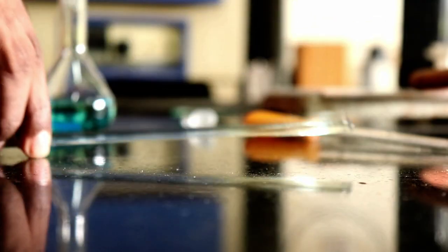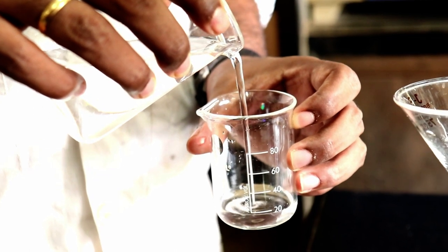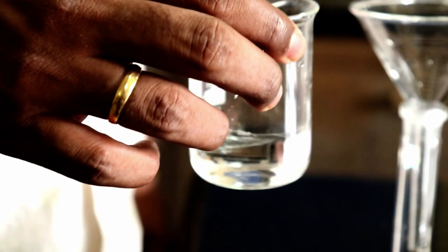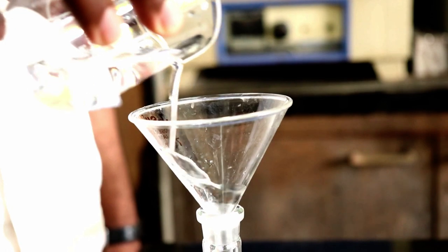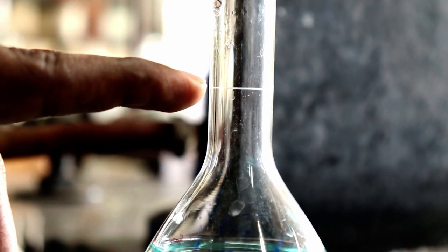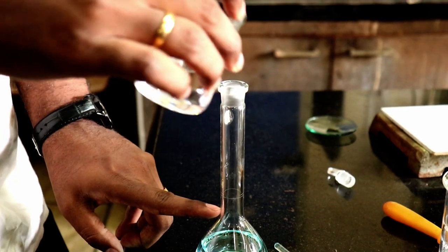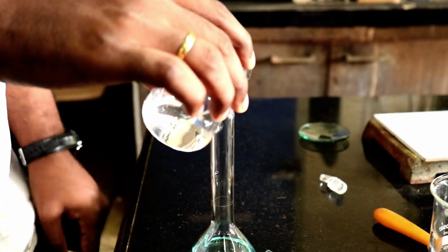The use of glass rod is over. Pour some water into the beaker, swirl it and wash the funnel. This is the calibration mark for the standard measuring flask. You need to fill the solution till here. Put some water till here directly from the beaker.